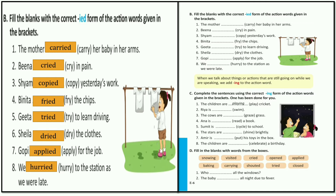So students, do you understand? If you have an action word ending with Y, to make the past form, Y will skip and we add IED. Some examples are given - you try at home. Search for more words ending with Y, change Y to IED, and make sentences. Do you understand? Awesome.